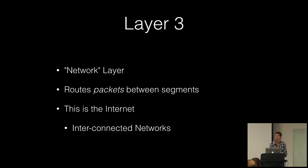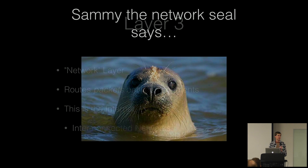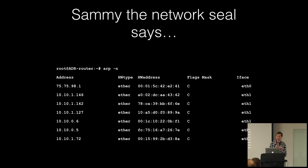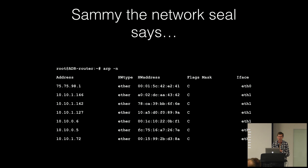A quick quiz: what does Sammy the network seal say? ARP! This is the translation between layer two and layer three. Whenever a host needs to figure out that it's on the same network segment as another host it needs to communicate with, it can't just send the packet to a router — it needs to talk directly to that host, which requires knowing that host's MAC address. That's what ARP is for.